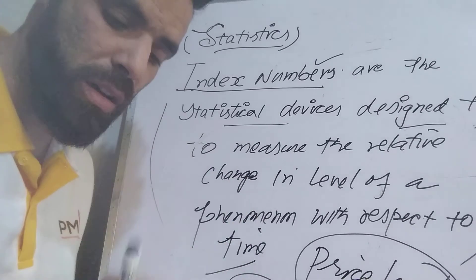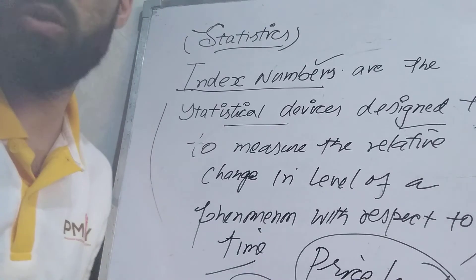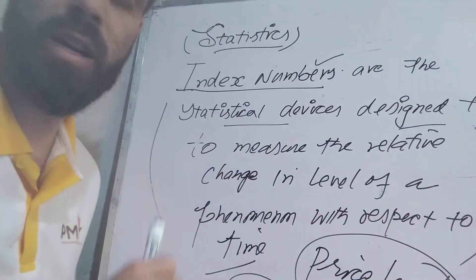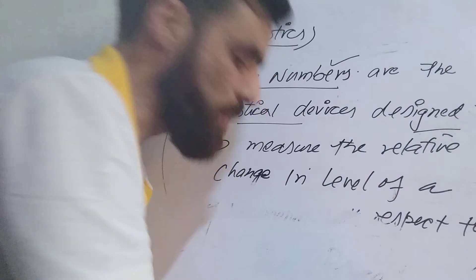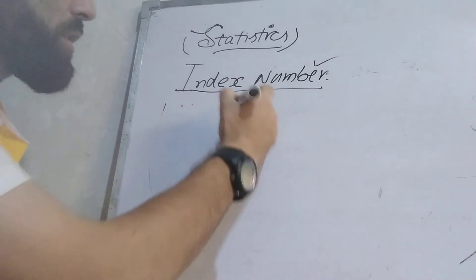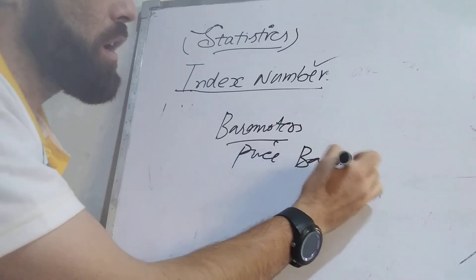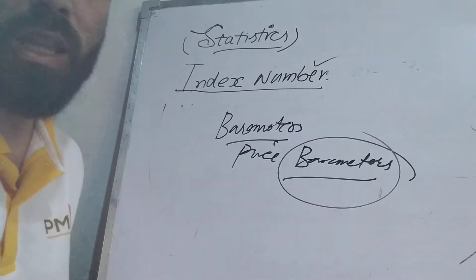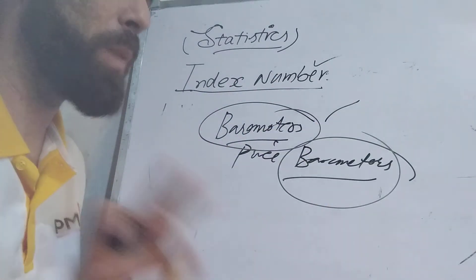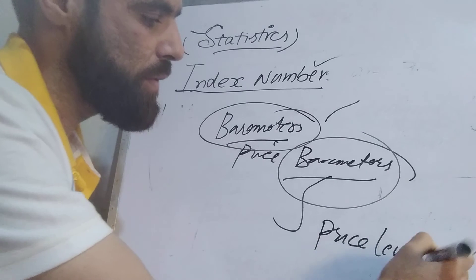You may be wondering why we are talking about inflation when studying index numbers. Actually, index numbers act like barometers. Most of us know that barometers are instruments that measure atmospheric pressure. In the same way, index numbers are the price barometers — they measure the price level in the economy.